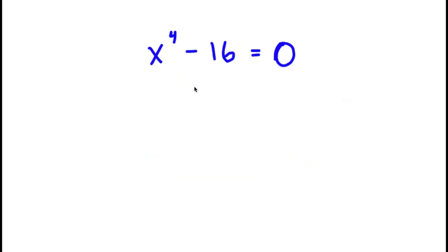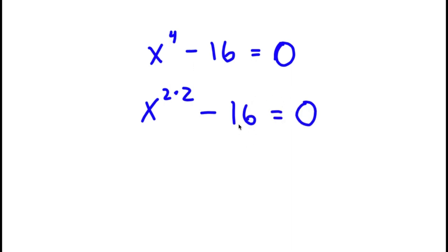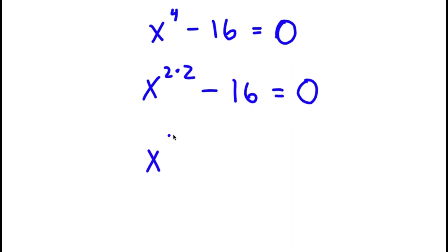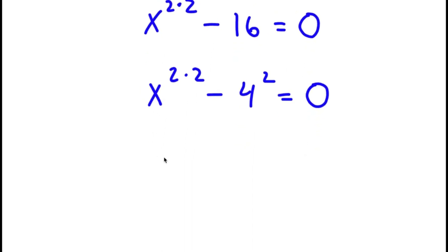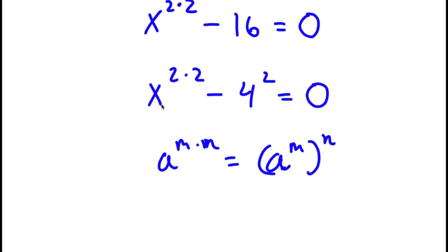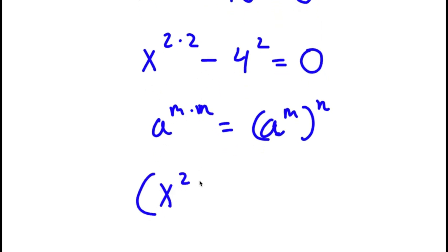In this problem, I have x to the power of 4 minus 16 is equal to 0. To solve this, I rewrite x to the power of 4 as x to the power of 2 times 2, and 16 as 4 to the power of 2. Then x to the power of 2 times 2 can be rewritten as x to the power of 2 to the power of 2, giving x to the power of 2 squared minus 4 squared equals 0.